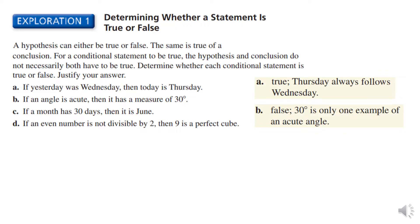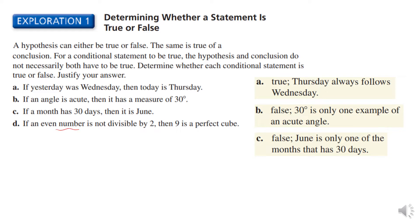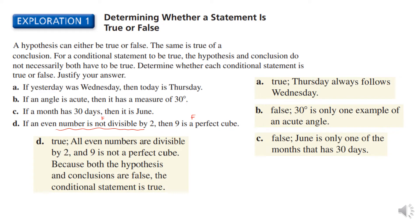If a month has 30 days, then it's June — false for the same reason; there are a lot of months that have 30 days. If an even number is not divisible by 2, then 9 is a perfect cube — well, all even numbers are divisible by 2, so that hypothesis is false. And 9 is a perfect square, not a perfect cube, so the conclusion is also false. But because both are false, the conditional statement is true.